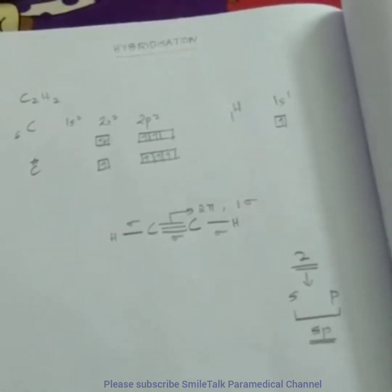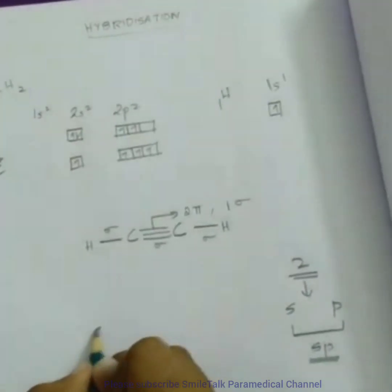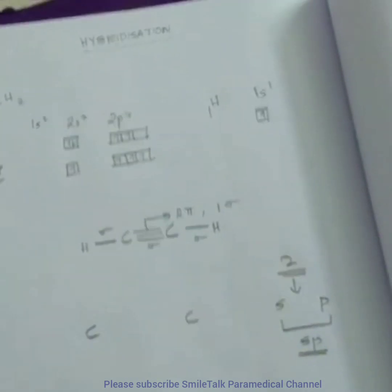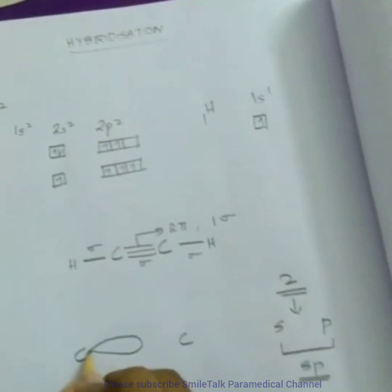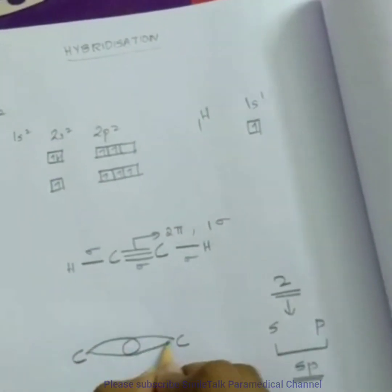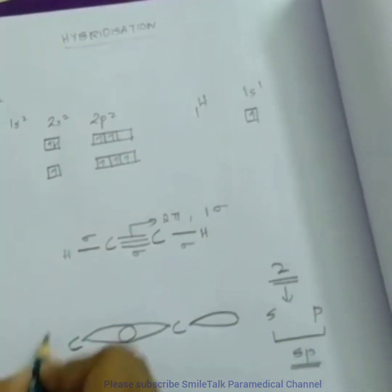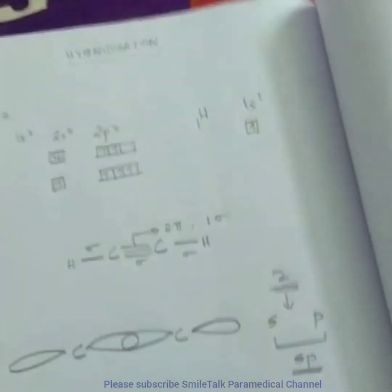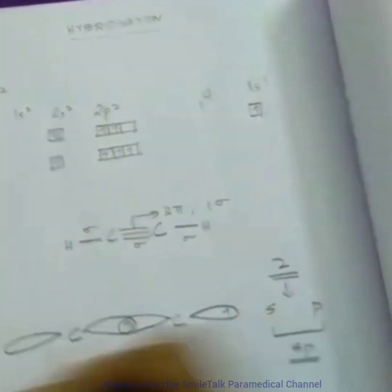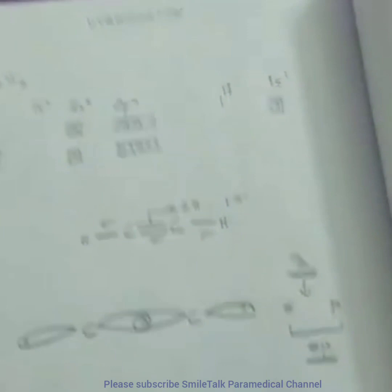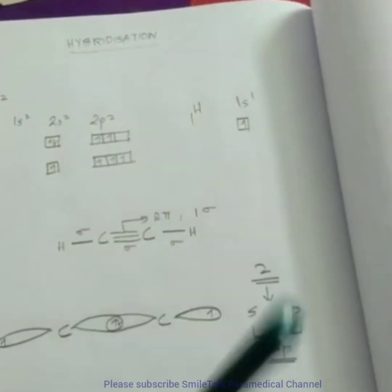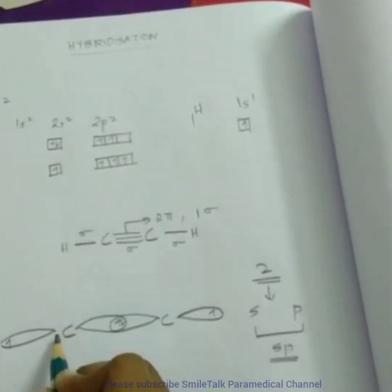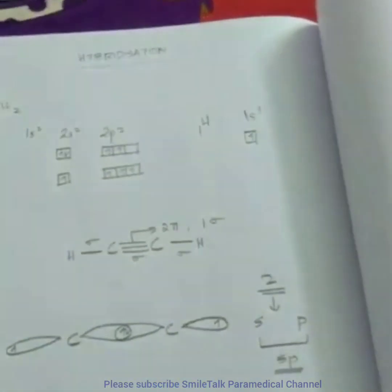Now let's draw the structure. One carbon atom and one carbon atom over here. It will be having two hybrid orbitals, to be specific it will be sigma bonds, and we have two pi bonds in a single carbon atom.